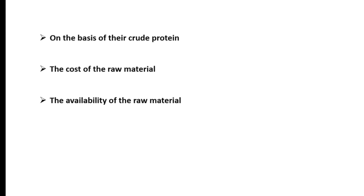We are also going to select our ingredients on the basis of cost of the raw material. To cut down the cost of feed, we must use cost-effective raw materials. If we use raw materials that are very expensive, our final product — the formulated feed — will also be very expensive, and that is what we don't want. We want to produce cheaper feed that gives maximum results using cheaper raw materials.